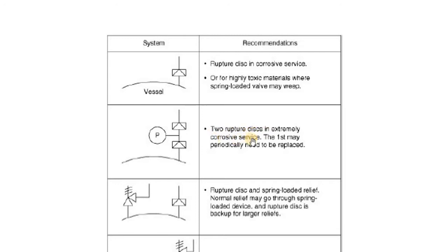For extremely corrosive service, you could use two rupture discs in series. The first may practically need to be replaced periodically since the corrosive material will damage and corrode that rupture disc until it opens and fails. The second one is then ready until you maintain the first one, and you alternate like that.